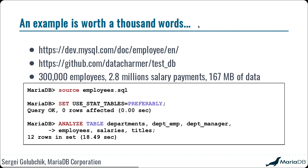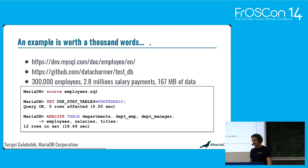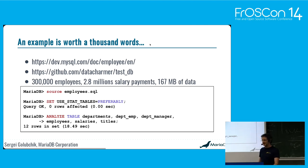Now let's look at examples. I use the employee database, referenced from the MySQL manual — it's a project by Giuseppe Maxia on GitHub. It's not a very big dataset but it's 167 megabytes and 300,000 rows, so not a very small one either. To load it, just run one source command and it includes lots of load data internally. Then we enable stat tables by setting use_stat_tables to preferably, and run ANALYZE without any additional clauses. It took only 18 seconds to calculate statistics for all the tables.